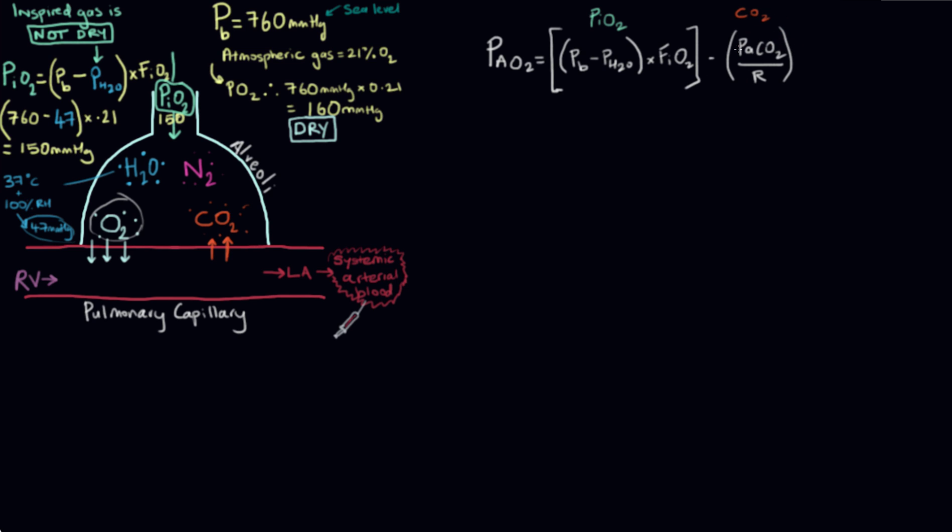And then we're going to use this value here called the respiratory quotient, sometimes called the respiratory exchange ratio. And all that is is a reflection of the fact that oxygen consumption exceeds CO2 production under normal conditions. So CO2 produced divided by oxygen consumed.